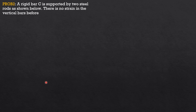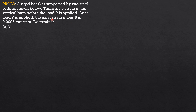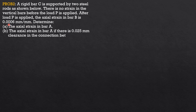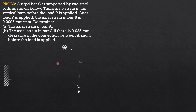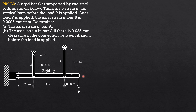A rigid bar C is supported by two steel rods as shown. There is no strain in the vertical bars before load P is applied. After load P is applied, the actual strain in bar B is 0.0006 mm per mm. Determine: (a) the actual strain in bar A, and (b) the actual strain in bar A if there is a 0.025 mm clearance in the connection between A and C before the load is applied.